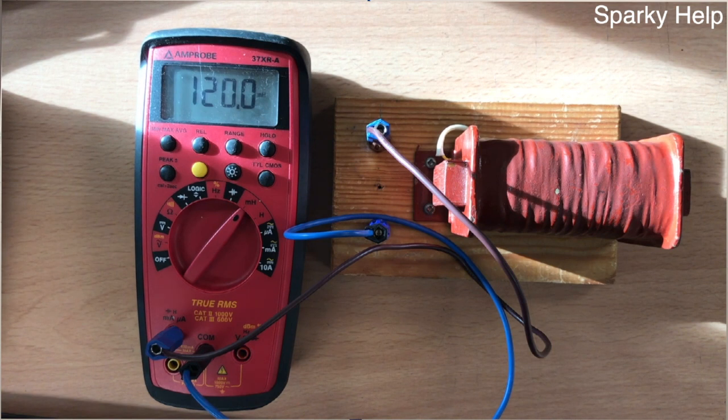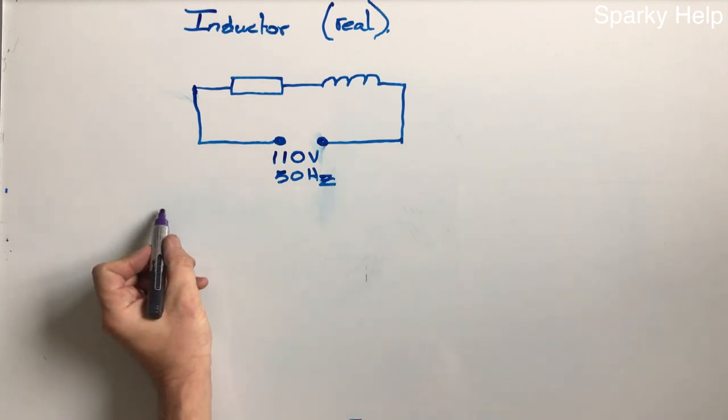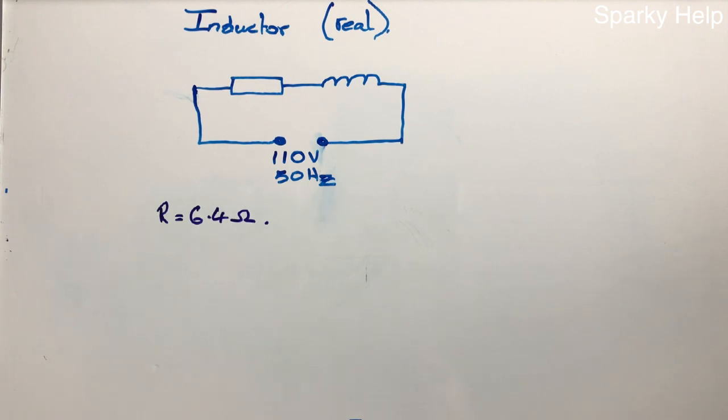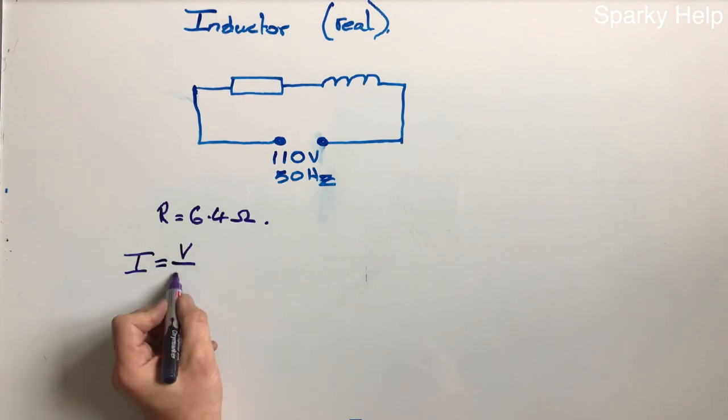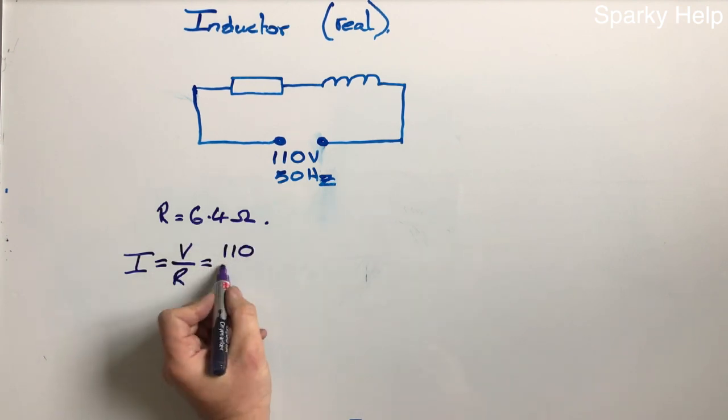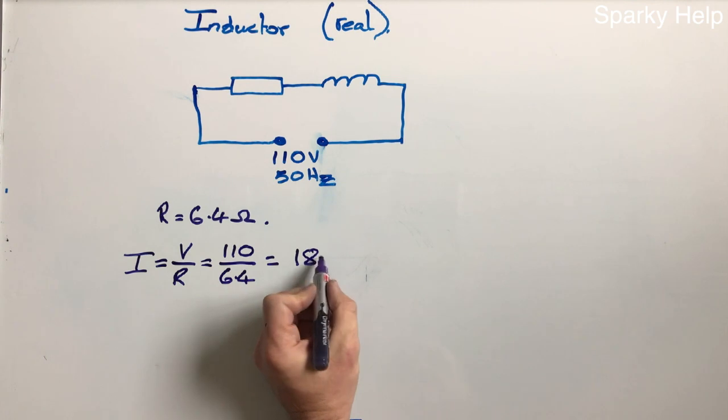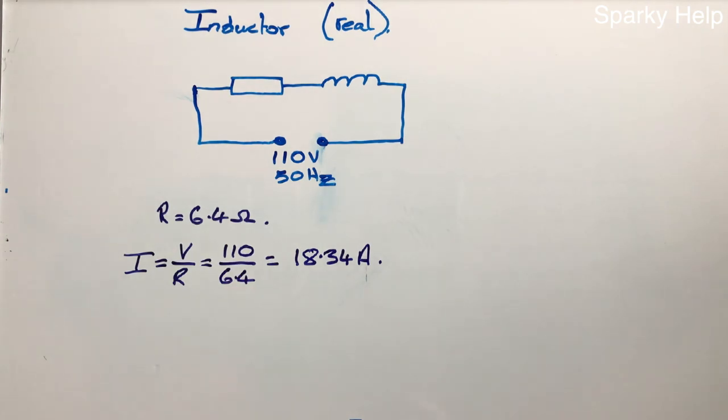Now to show that there is this thing going on, which you have to trust me, which is this back EMF. If we take the resistance of the coil, which is 6.4 ohms, and we apply Ohm's law, we would say V divided by R. In this case, 110 divided by 6.4. If we do that as a calculation, we get 18.34 amps would flow around in this circuit. That's what you'd expect to get.